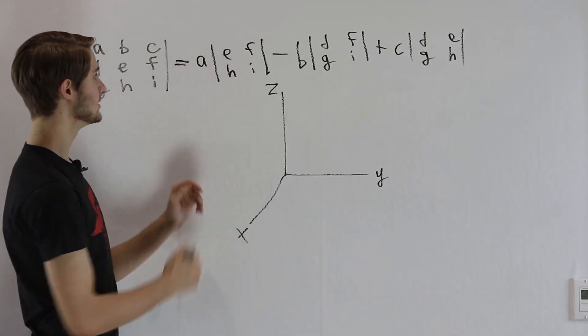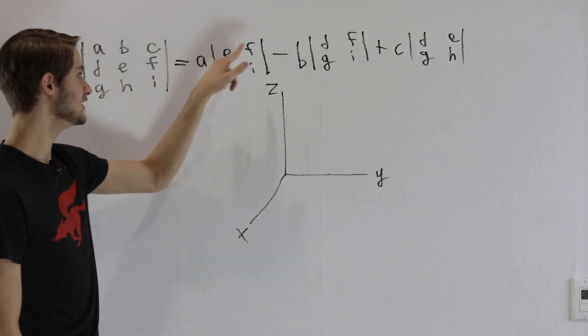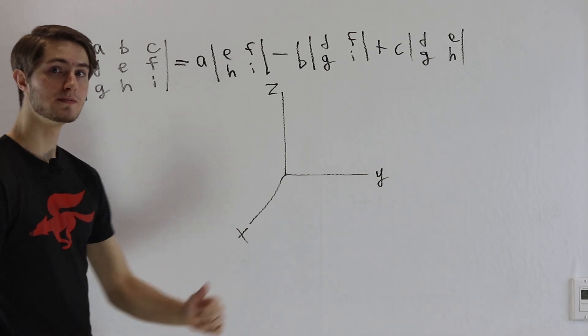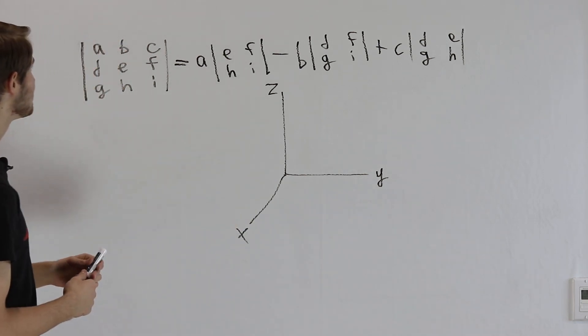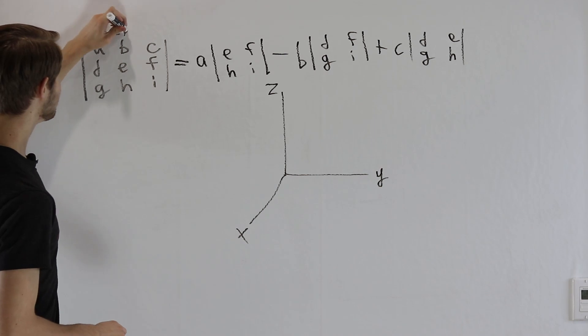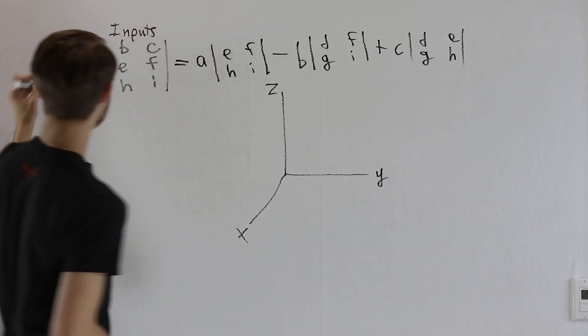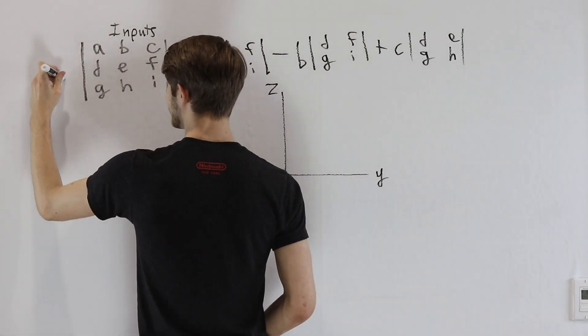First of all, what does this part here mean? A times the determinant of EFHI. Well, remember from the last video, when we're looking at matrices, that the columns represent inputs and the rows represent outputs.